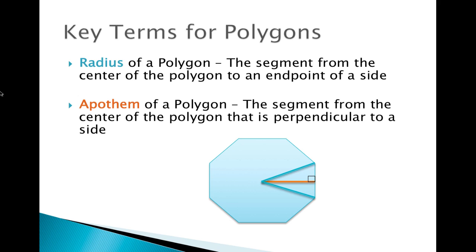The first is a radius of a polygon. I know you're familiar with the radius of a circle, and it's very similar. Specifically, the radius of a polygon is the segment from the center of a polygon to an endpoint of a side. For example, with a polygon here, this is our center. The radius goes from the center to an endpoint of the side — where the two different sides meet. That will be your radius.